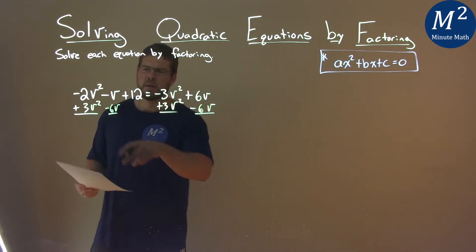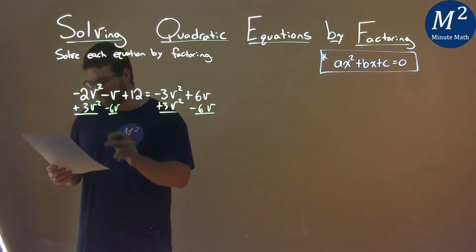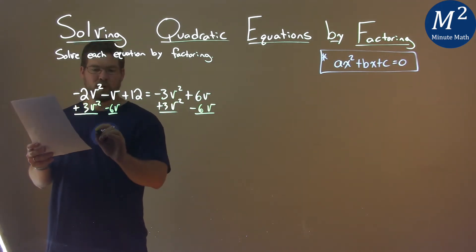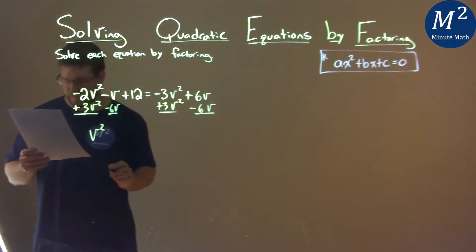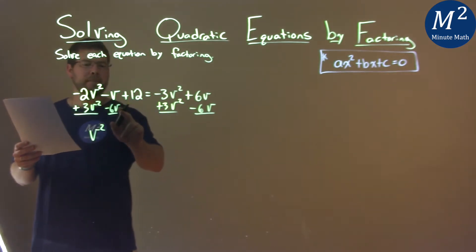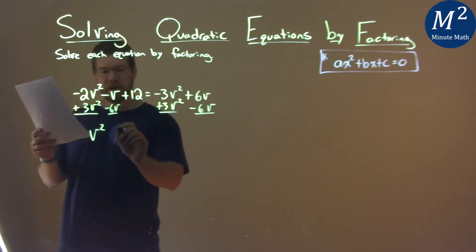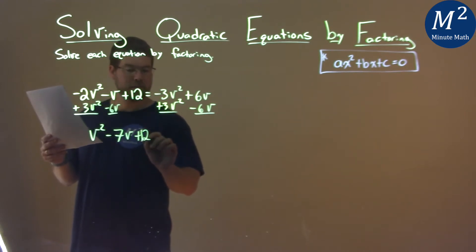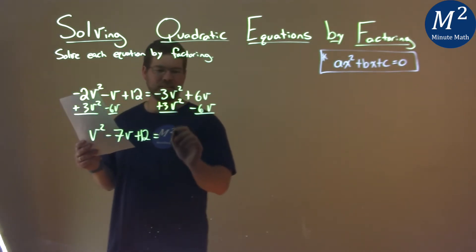So what happens? -2v² + 3v² is just v². Then -v - 6v is -7v. The plus 12 comes down, and it's equal to 0. Remember, these cancel.